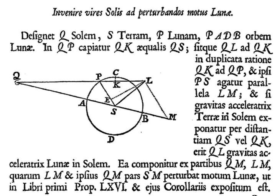Lunar theory attempts to account for the motions of the Moon. There are many small variations in the Moon's motion, and many attempts have been made to account for them. After centuries of being problematic, lunar motion is now modeled to a very high degree of accuracy.